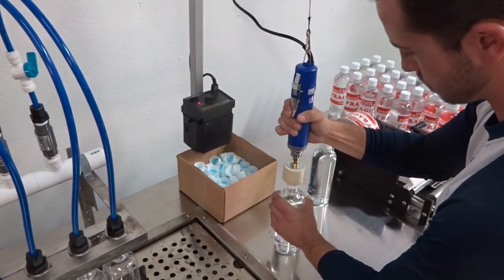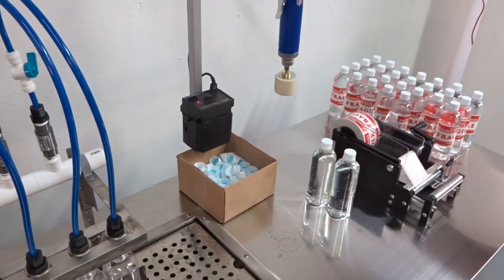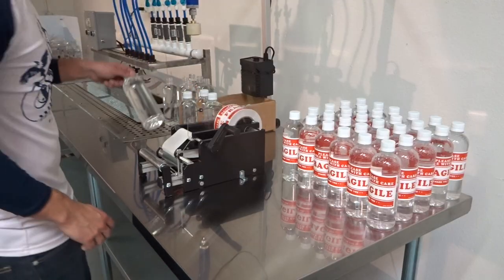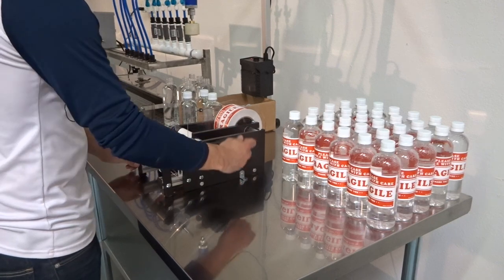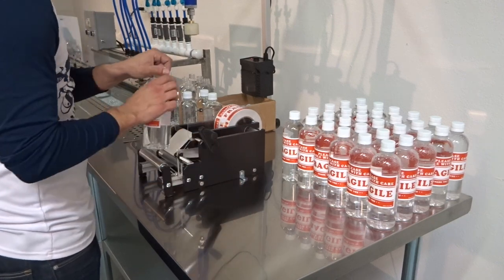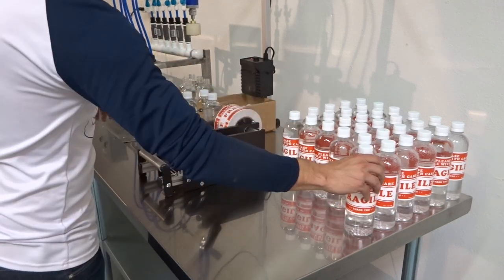Once the bottle has its cap, it is ready for its label. The operator places the bottle on the labeling machine and turns the handle. The label will be applied to the bottle and then the bottle is complete.